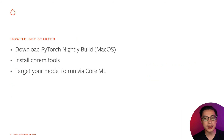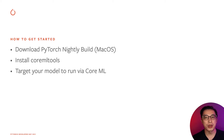To get started, first download the PyTorch nightly build on your macOS machine. You also need to install Core ML tools. And finally, you'll be using the Core ML Delegate API to optimize your TorchScript model to run on Core ML.